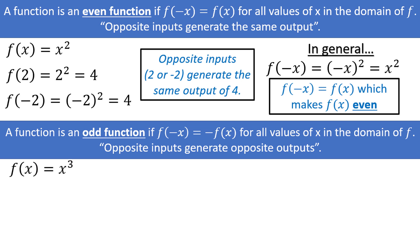Consider f of x is equal to x to the third power. If you plug in a positive number, and then the negative version of the same number, you will get the same output but the sign will be flipped.